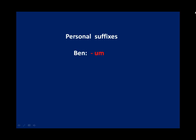After you've done all that, you have to add the personal suffixes — the specific suffix for each person. For ben (I), you add '-um'. For sen (you), you add '-sun'. For o (he/she/it), you don't add anything — it just stops at '-yor'. For biz (we), you add '-uz'. For siz (you all), you add '-sunuz'. And for onlar (they), you can leave it without adding anything, or you can add the plural suffix '-lar'/'-ler', but it's not necessary — many people don't do that.